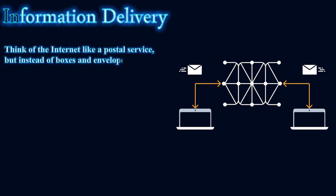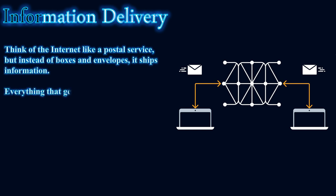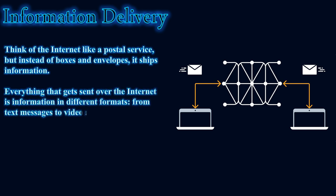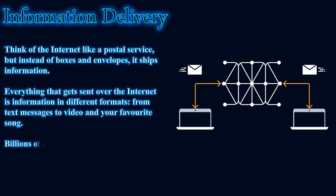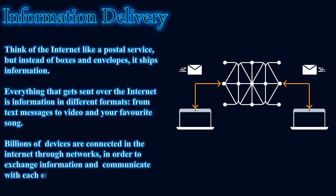Information delivery — how information travels throughout the network: think of the internet like a postal service, but instead of boxes and envelopes, it ships information. Everything sent over the internet is information in different formats, from text messages to video and your favorite song. Billions of devices are connected to the internet through networks in order to exchange information and communicate with each other.